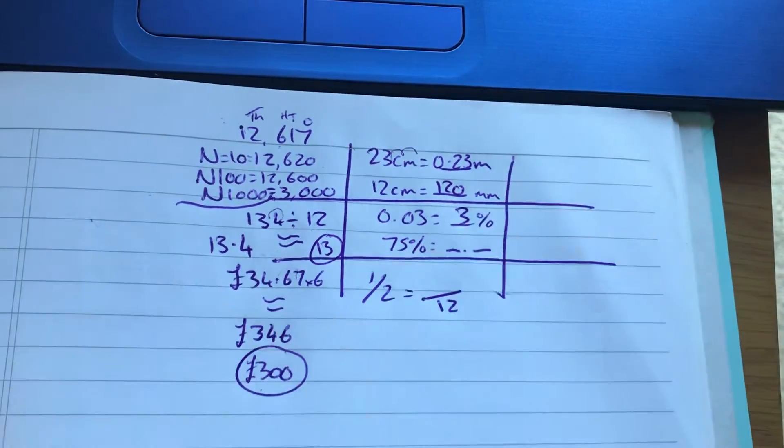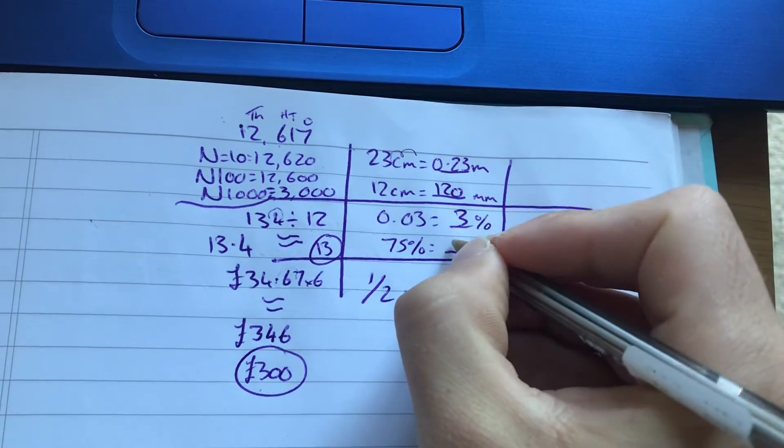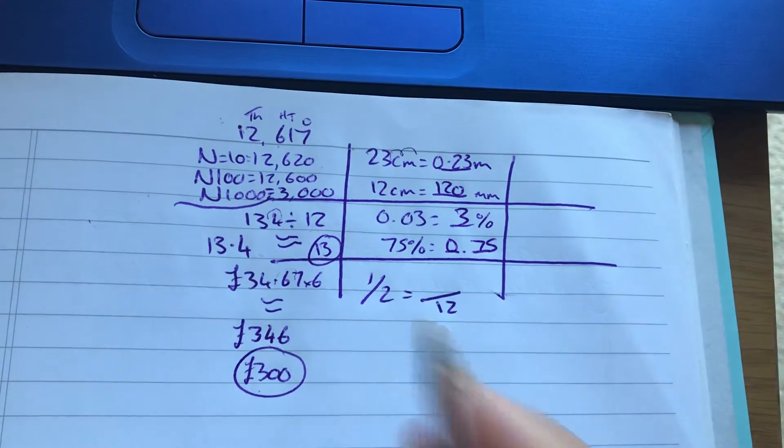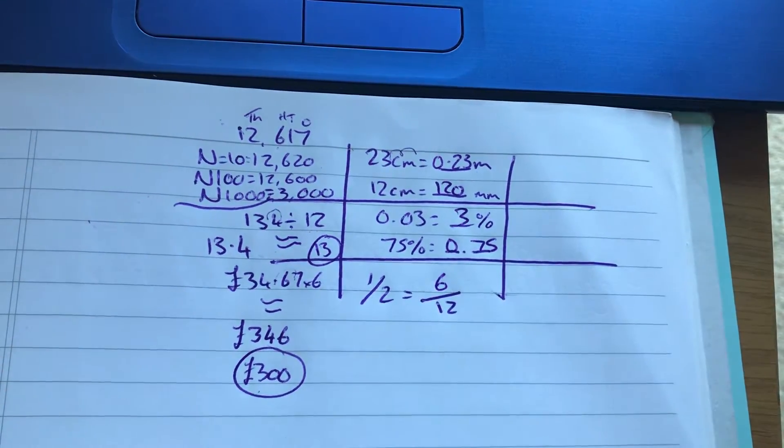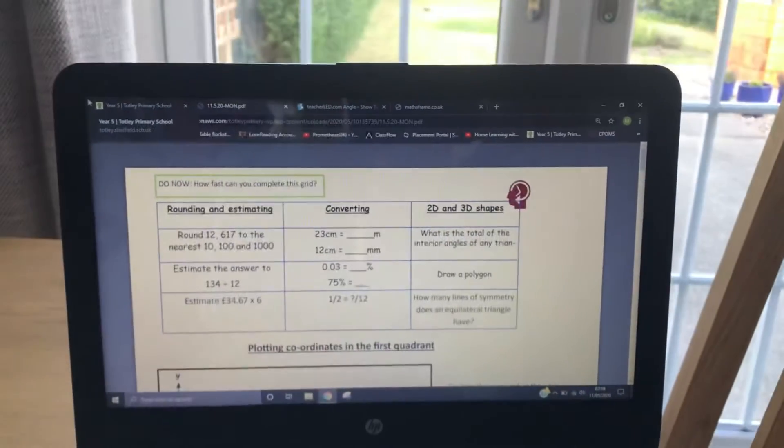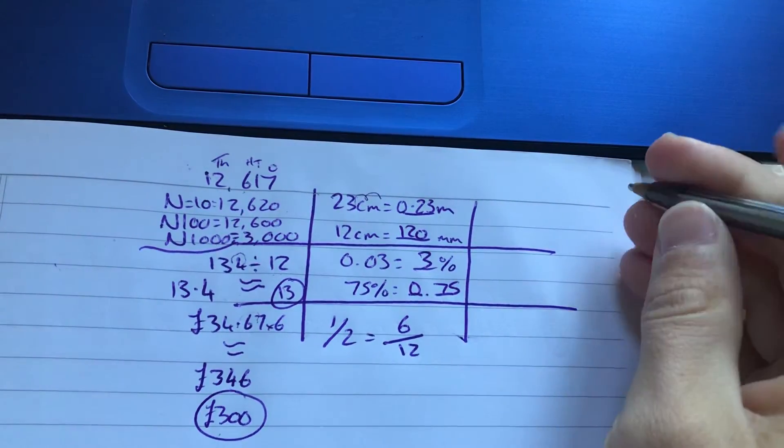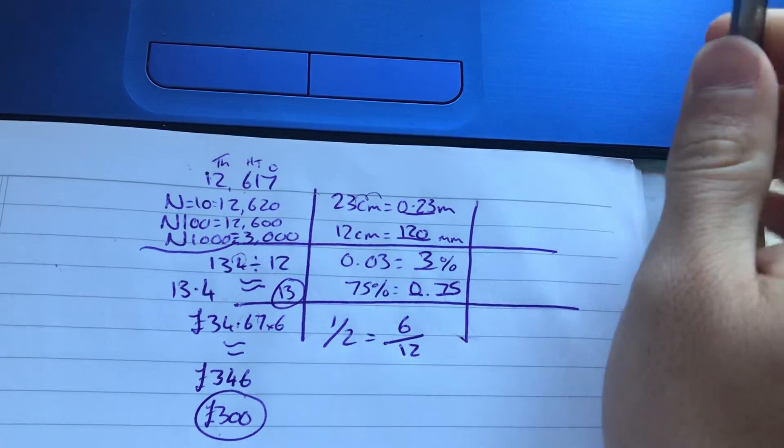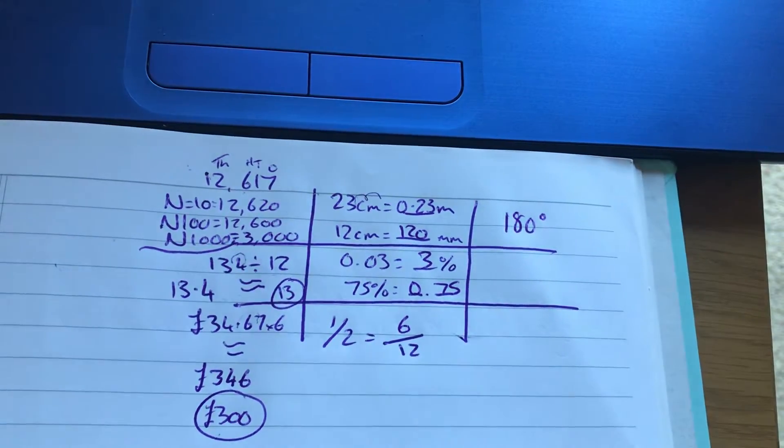0.03, 3%, 75%, a test of your number facts here. You should just know that 75% is 0.75. And then at the bottom here, half is equivalent to, well, if the denominator is 12, the numerator is going to be 6. And then a new section of do-nows is the 2D and 3D shapes. What is the total angle of the interior angles of any triangle? You should know that that is 180 degrees. We've done lots of angle work.